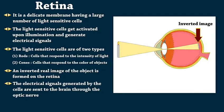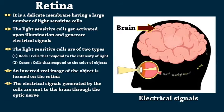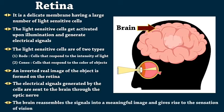The electrical signals generated by the cells are sent to the brain through the optic nerve. The brain reassembles the signals into a meaningful image and gives rise to the sensation of vision.